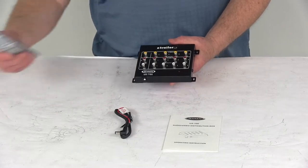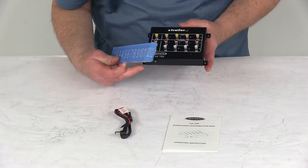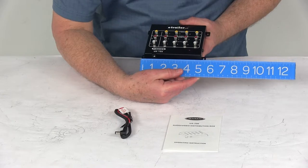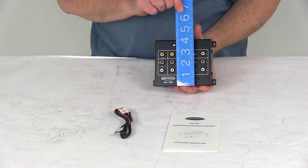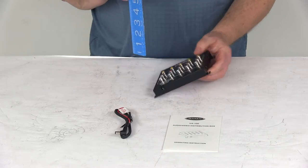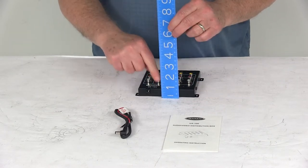The overall measurements: the total width, including the mounting brackets, is about five and a half inches. The depth is about four and one-eighth inches, and the total height is about one inch.